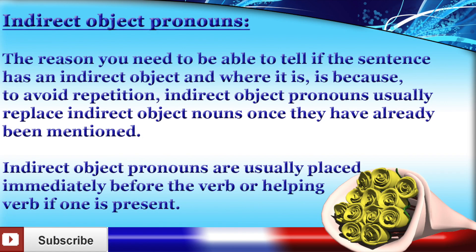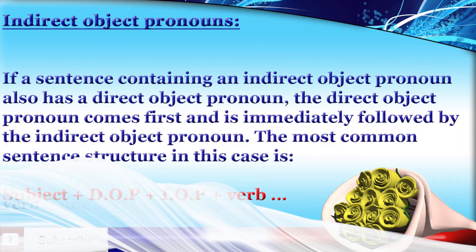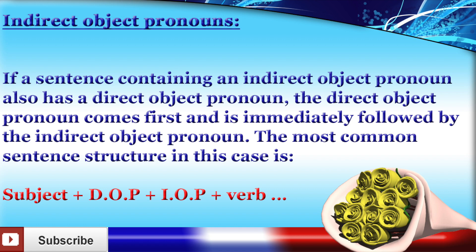The reason you need to be able to tell if the sentence has an indirect object and where it is, is because, to avoid repetition, indirect object pronouns usually replace indirect object nouns once they have already been mentioned. Indirect object pronouns are usually placed immediately before the verb or helping verb if one is present. If a sentence contains both an indirect object pronoun and a direct object pronoun, the direct object pronoun comes first and is immediately followed by the indirect object pronoun. So the most common sentence structure is: subject, direct object pronoun, indirect object pronoun, then the verb.